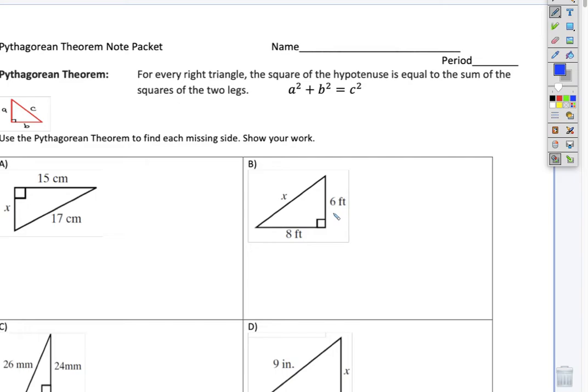In example b, we have six feet for this side, eight feet for that side, and then we don't know this side x. The two, if you look at the two sides we know, those two sides make the right angle. So this would be our a, this would be our b, and the one we don't know is the hypotenuse, which is c. So we're going to take our formula, a squared plus b squared equals c squared, and we're going to plug in the two things we know, which are a and b. So six squared plus eight squared equals c squared.